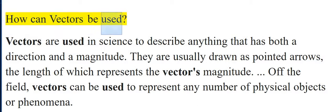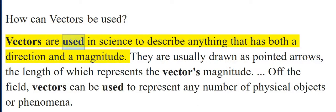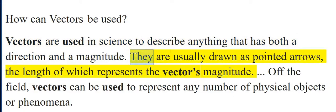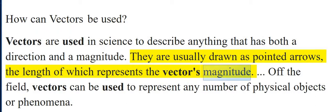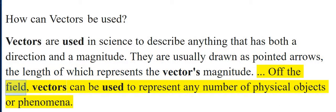How can vectors be used? Vectors are used in science to describe anything that has both a direction and a magnitude. They are usually drawn as pointed arrows, the length of which represents the vector's magnitude. Off the field, vectors can be used to represent any number of physical objects or phenomena.